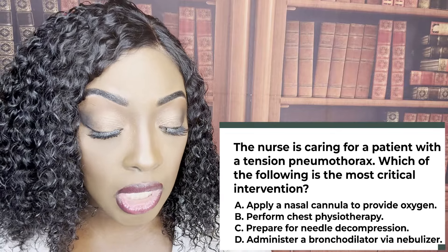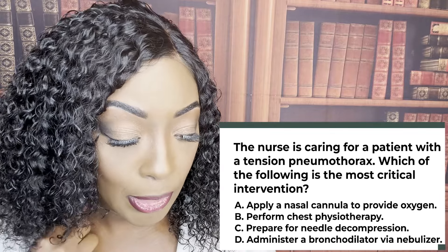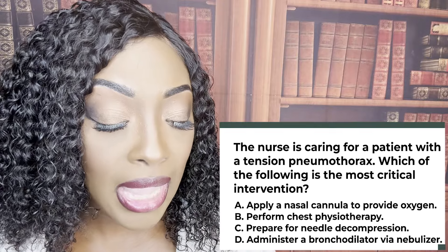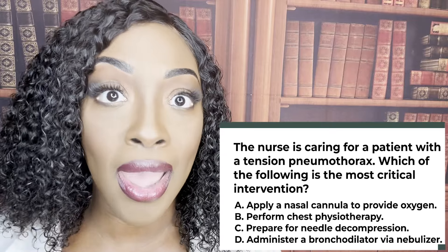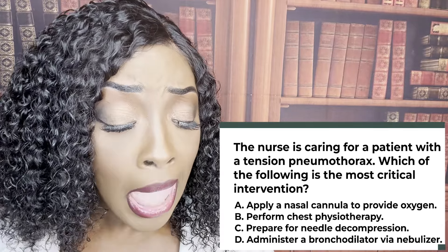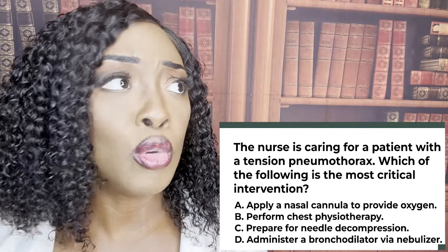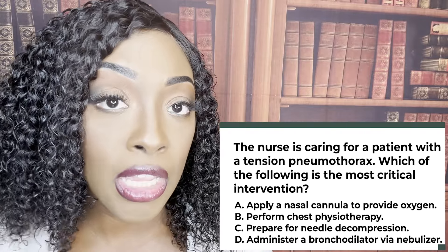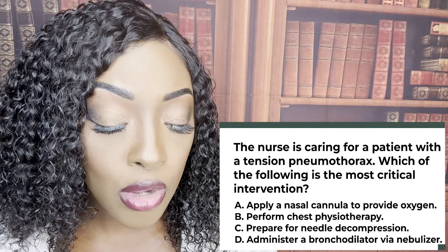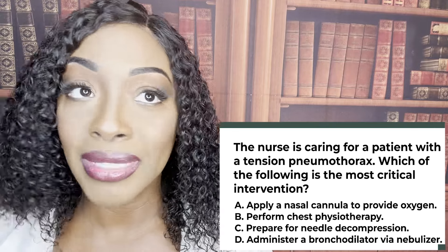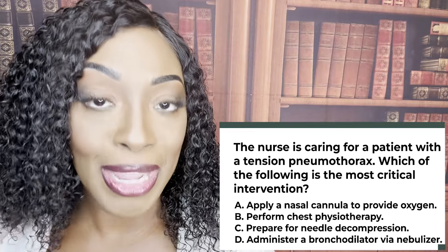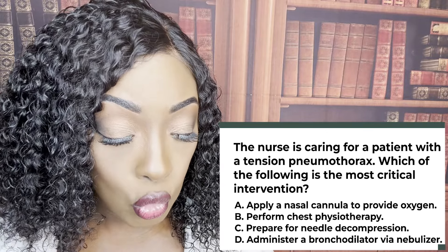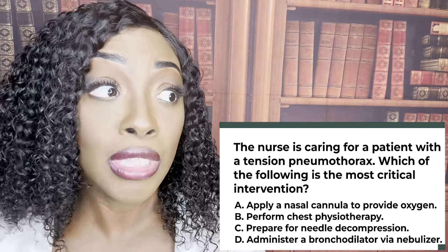The most crucial intervention is decompression because the problem is that air can't go anywhere. Right after needle decompression, you would expect a chest tube to be inserted. The wrong answers: A, nasal cannula — oxygen is not the problem, the issue is air not escaping. B, chest PT — the problem isn't mucus plugs, it's air entering the pleural space and not escaping, causing increased intrapleural pressure. D, bronchodilator — that would be for bronchoconstriction, which is not what's happening. Choice C is correct.